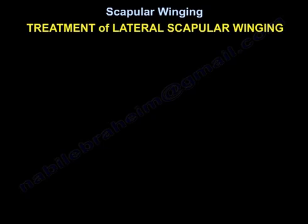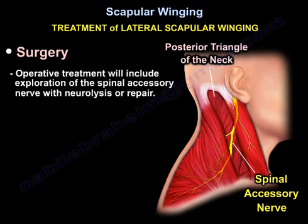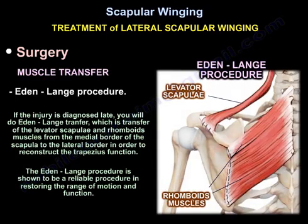Treatment of lateral winging of the scapula includes observation, activity modification, and physiotherapy. Operative treatment includes exploration of the spinal accessory nerve with neurolysis or repair. In muscle transfer, the Eden-Lange procedure is used. If the injury is diagnosed late, the Eden-Lange transfer is performed, which transfers the levator scapulae and rhomboid from the medial border of the scapula to the lateral border in order to reconstruct trapezius function. The Eden-Lange procedure is shown to be a reliable procedure in restoring range of motion and function.